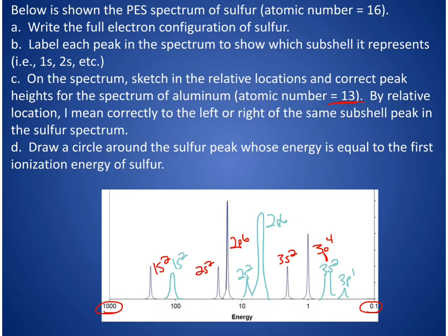And then D says draw a circle around the peak whose energy is equal to the first ionization energy. That would be my last or outer electrons here. So there would be my first ionization energy.